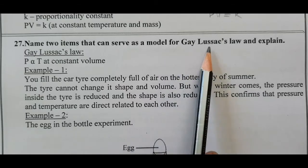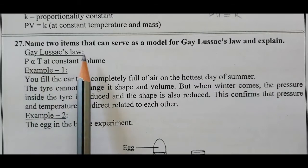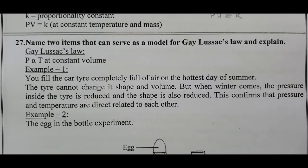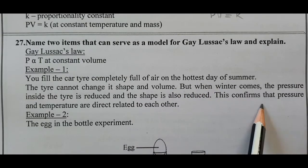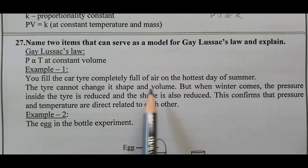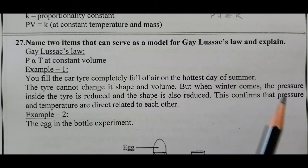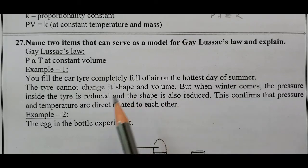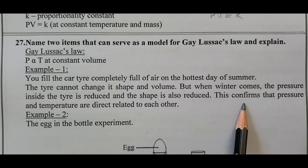Question number 27: Name two items that can serve as a model for Gay-Lussac's Law and explain it. At constant volume, pressure is directly proportional to temperature. Example one: You fill the car tire completely full of air on the hottest day of summer. The tire cannot change its shape and volume. But when winter comes, the pressure inside the tire is reduced. This confirms that pressure and temperature are directly related to each other.